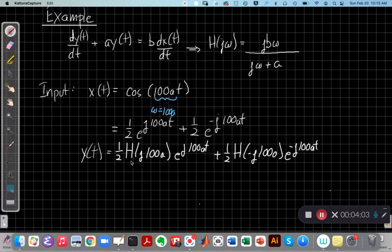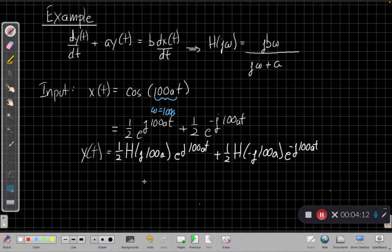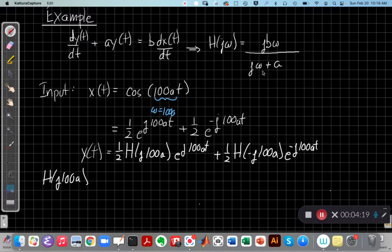Our output will take this form where I have each of these same exponentials and still have the half, but each one gets scaled by the gain at ω equals 100a. So I need to go find that H(j100a), and it'll turn out to be symmetric. I'll only really need to find it once here. So to do that, I'm going to plug in ω equals 100a into this equation, and I'll bring that down here and show you what I get.